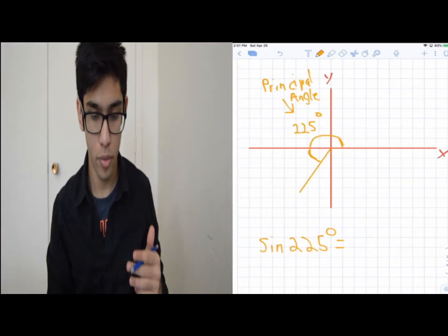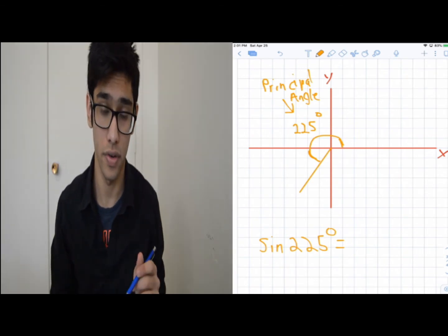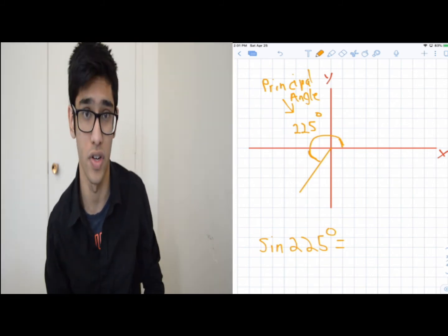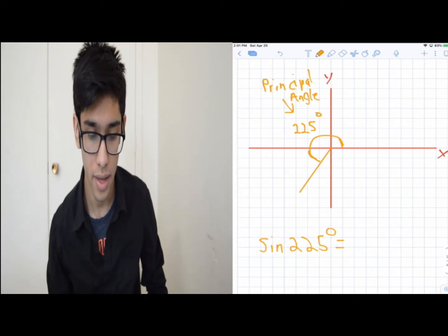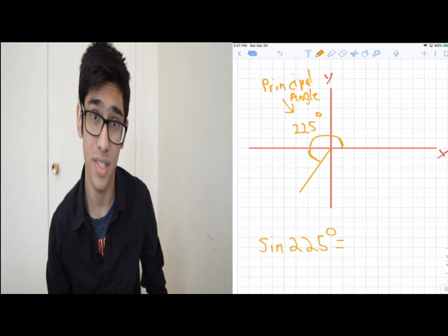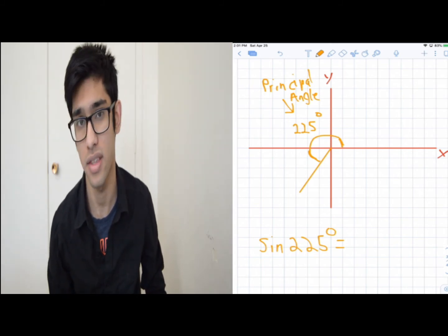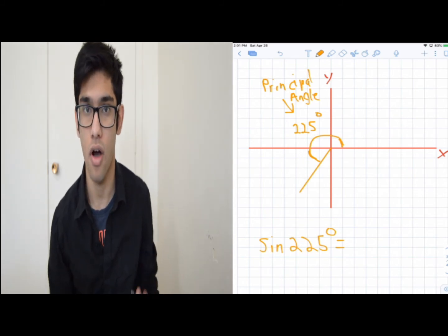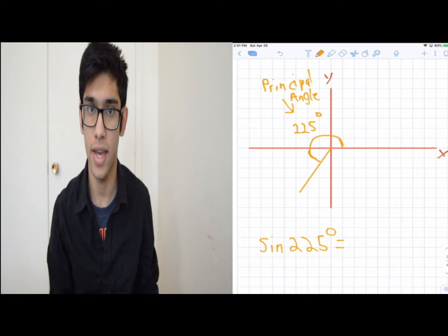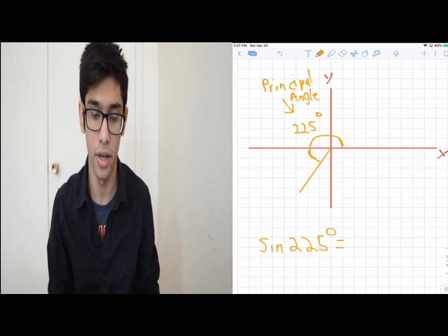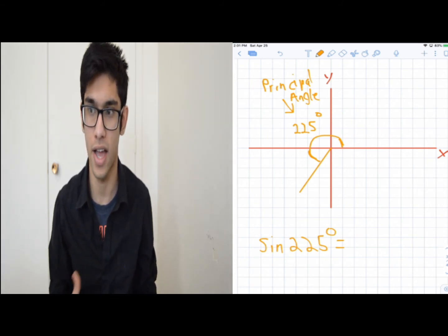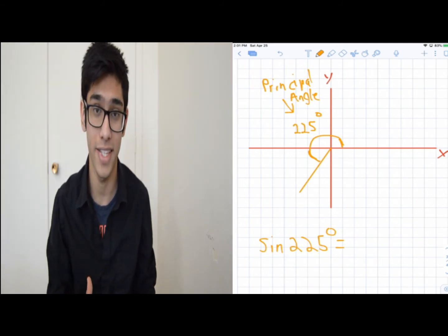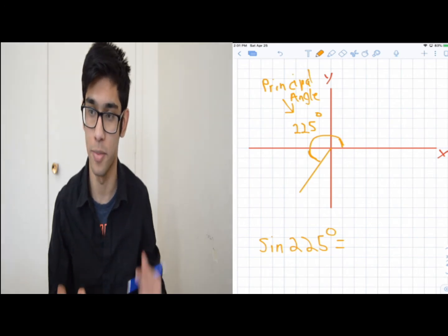Now, what if we had a principal angle of 225 degrees and I wanted to find sine of 225? This is a question where I don't know what sine of 225 is — I can't just visualize a right-angle triangle with 225 degrees in it. Your calculator actually finds the related acute angle to compute this.